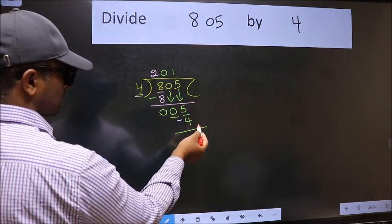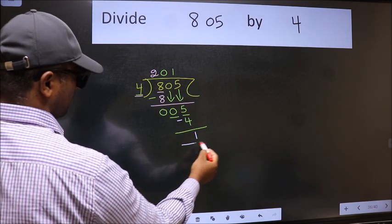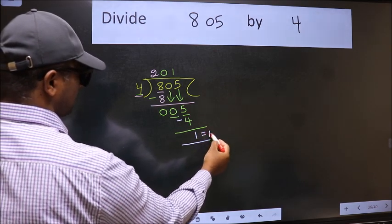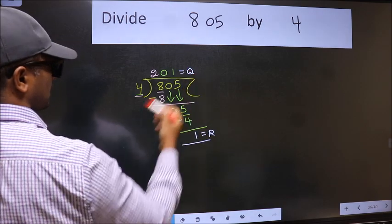No more numbers to bring down. So we stop here. This is our remainder and this is our quotient.